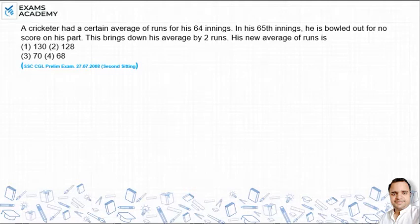Hello Friends, we will solve this problem. A cricketer has a certain average of runs for his 64 innings. In his 65th innings, he is bowled out for no score on his part. This brings down his average by 2 runs. What is his new average of runs?